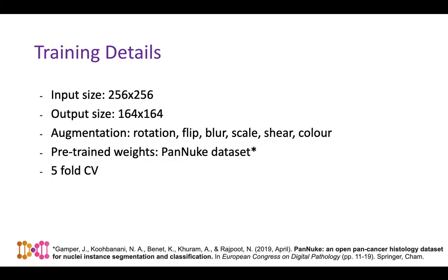For training details, we used an input size of 256×256 and output size of 164×164. Augmentation included rotation, flip, blur, scale, shear, and colour augmentation. We used pre-trained weights from the PanNuke dataset with five-fold cross-validation. PanNuke is a dataset curated within the Tissue Image Analytics Lab consisting of around 200,000 nuclei, providing a good basis for pre-training the network for subsequent use.